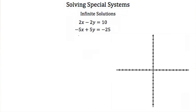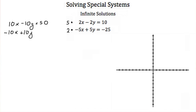Let's try this again with a different system: 2x minus 2y equals 10 and negative 5x plus 5y equals negative 25. I can solve this by eliminating — I'll multiply the first equation by 5 and the second by 2. We get 10x minus 10y equals 50 and negative 10x plus 10y equals negative 50. Adding those together gives 0x plus 0y equals 0. Well, 0 plus 0 equals 0, which makes sense, but it doesn't tell us anything about x or y.